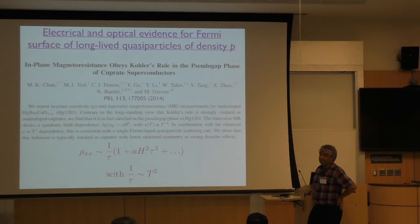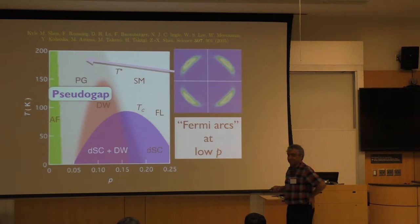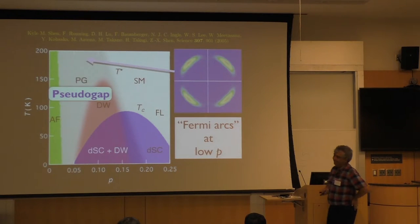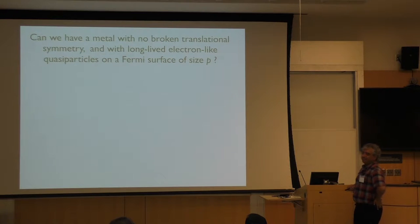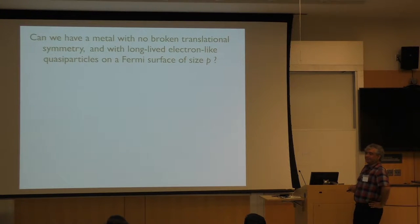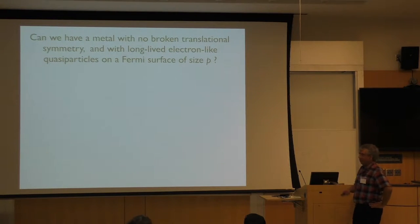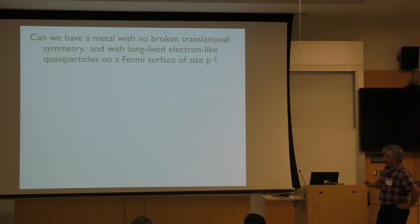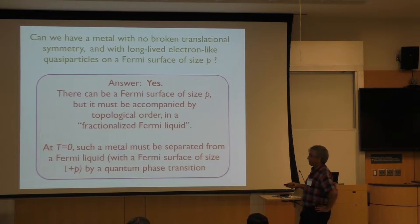Question: What do you mean by a mess? Answer: Well, this Fermi arc — that's what I mean by a mess. So, imagine I haven't given the lecture you just heard. If you look at this data and didn't know anything else, you'd ask: can you find a metal of quasi-particles which are perfectly conventional, on a Fermi surface of size P, not 1 plus P? And of course the answer is yes.